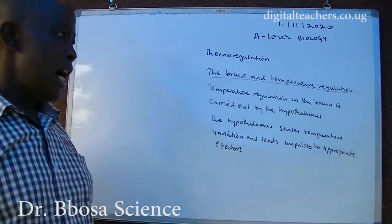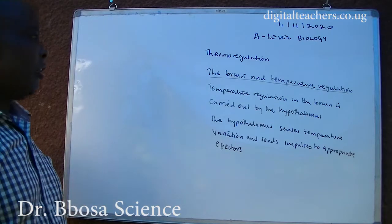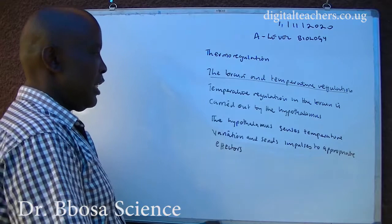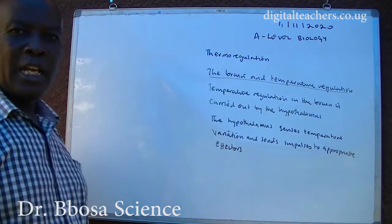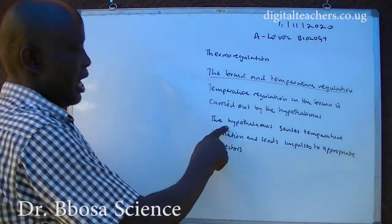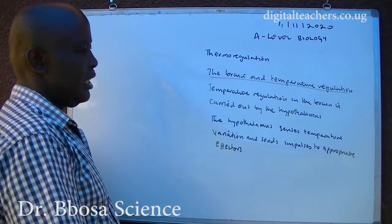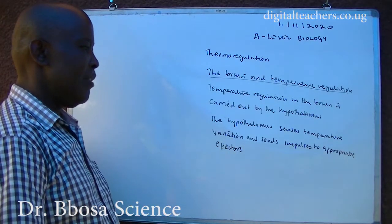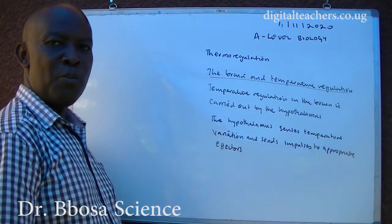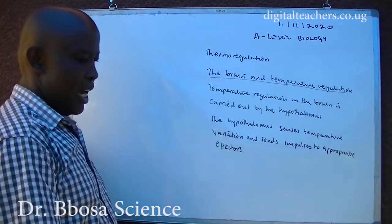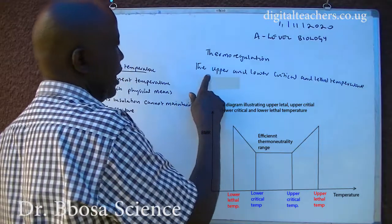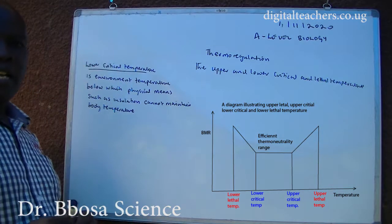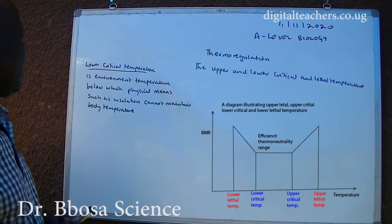The brain and temperature regulation. Temperature regulation in the brain is carried out by the hypothalamus. The hypothalamus senses temperature variation and sends impulses to appropriate effectors. Key terms include the upper critical temperature, lower critical temperature, and lethal temperature.